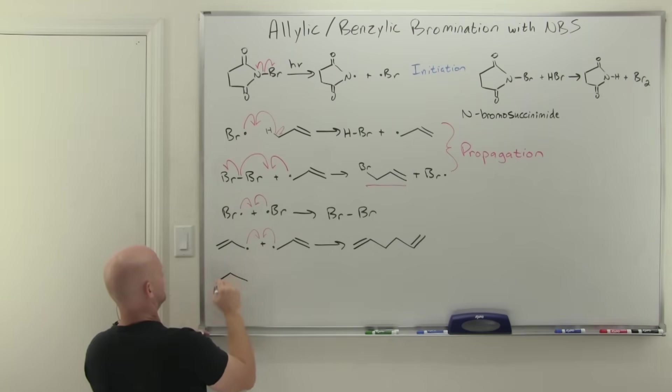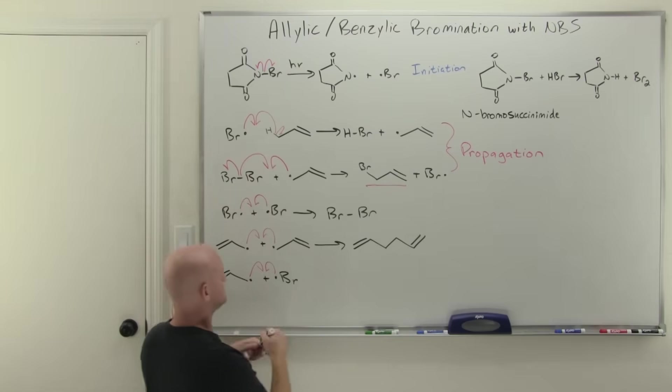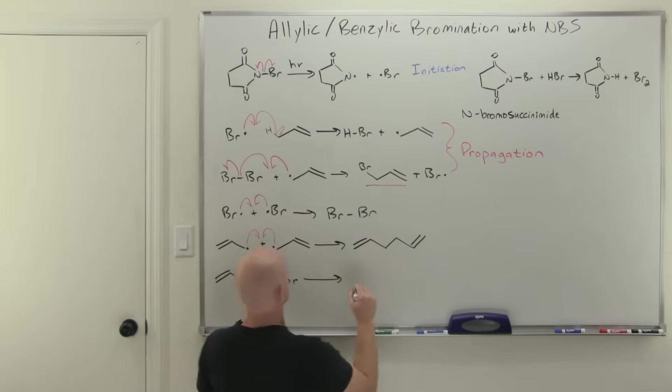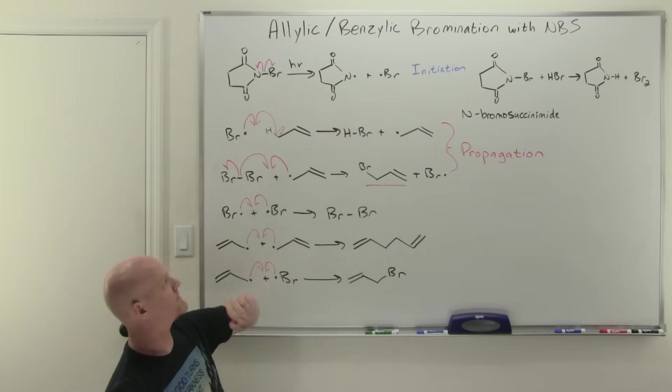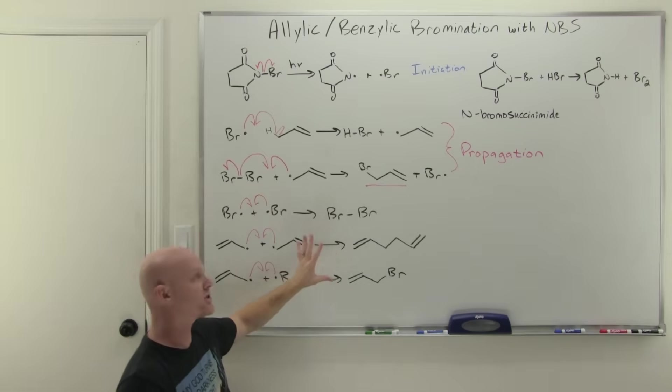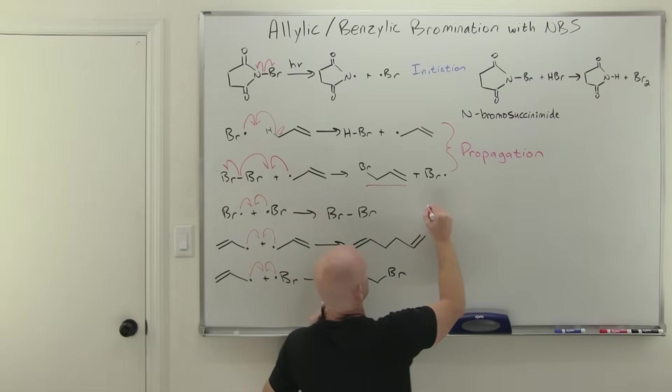And then finally, we could also then have a carbon radical bump into a bromine radical. And again, technically, this termination step actually forms a little bit more of our desired product. But again, so little of the termination should occur relative to the amount of propagation going on. But these are your most likely termination steps.